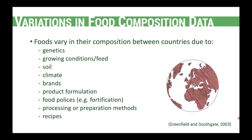It is also recommended that food composition tables be country specific, meaning that each country should have its own food composition table. If all these factors can affect the composition of foods, different countries will have variations regarding the genetics of their foods — different varieties or cultivars, different growing conditions, soil composition, and climate. We also have different brands, different product formulations, different food policies regarding mandatory and voluntary fortification, different preparation methods, and different recipes. Many factors that affect the composition of foods vary among countries, which is why each country should have its own food composition table.